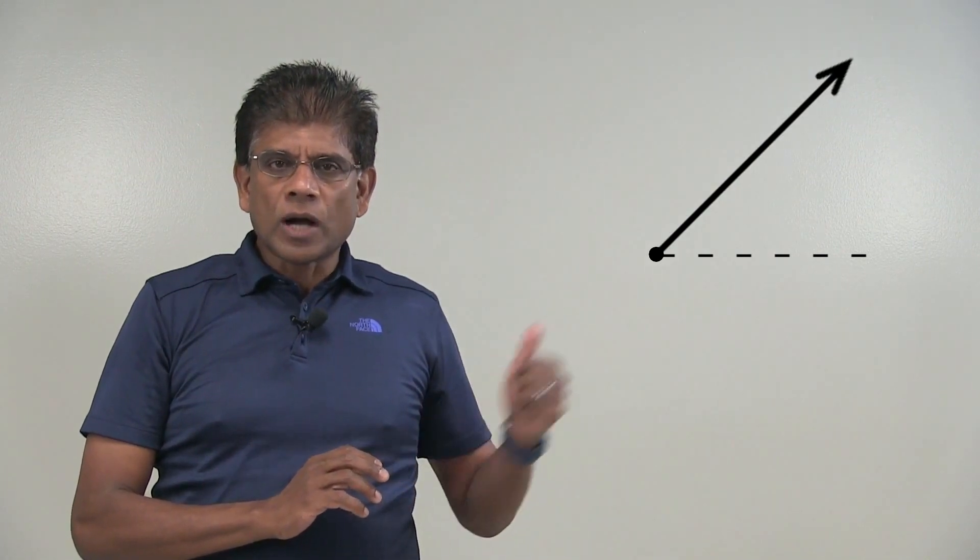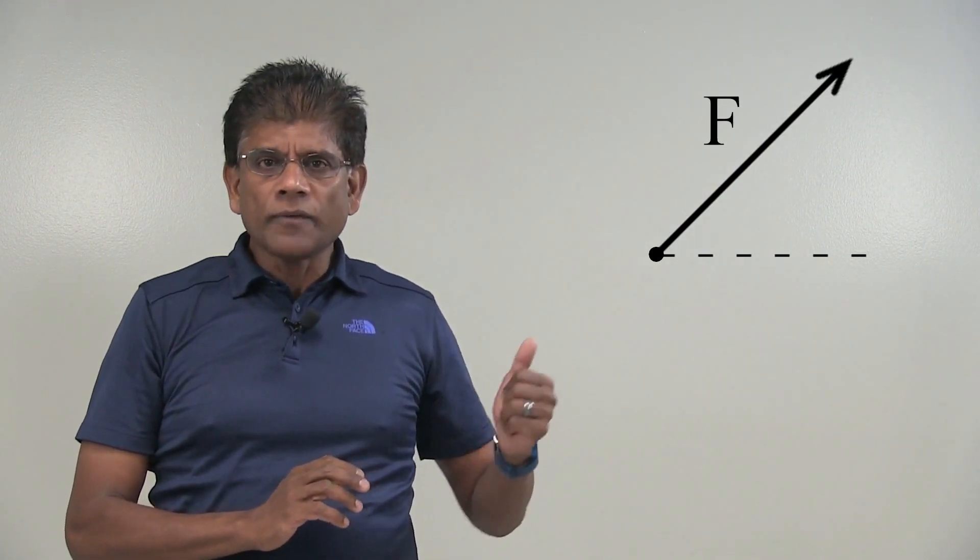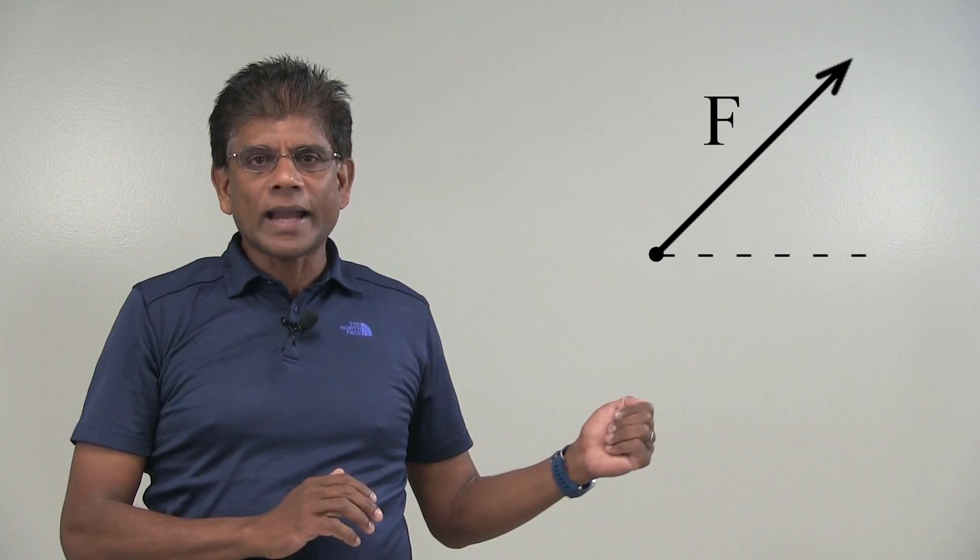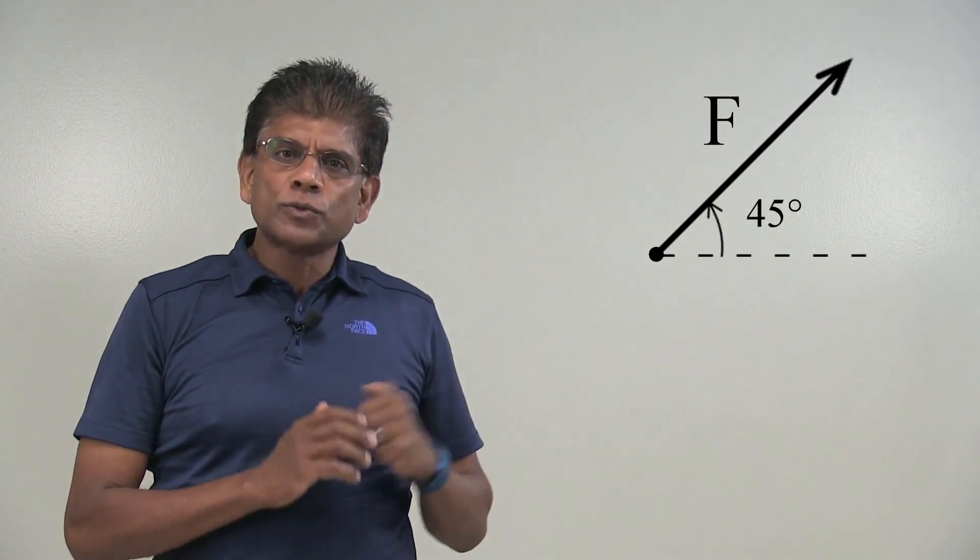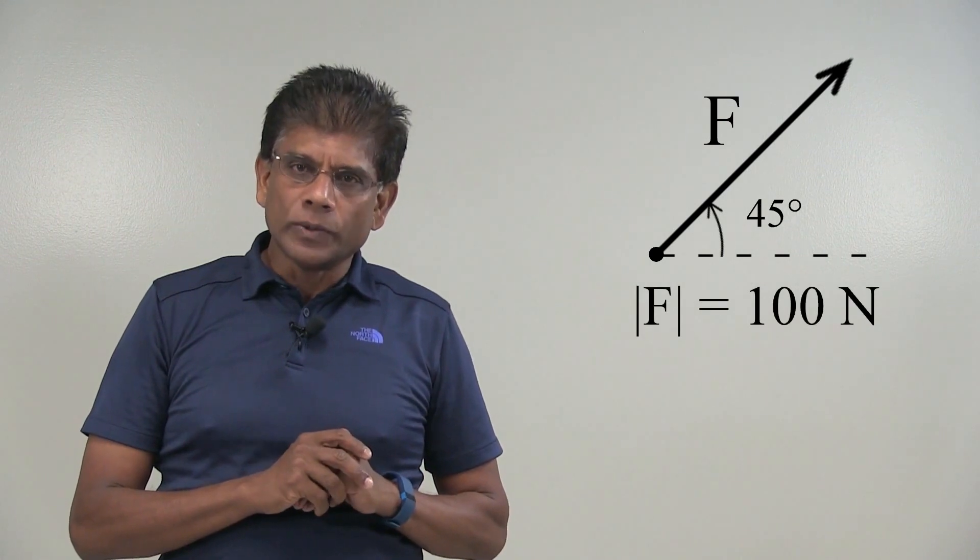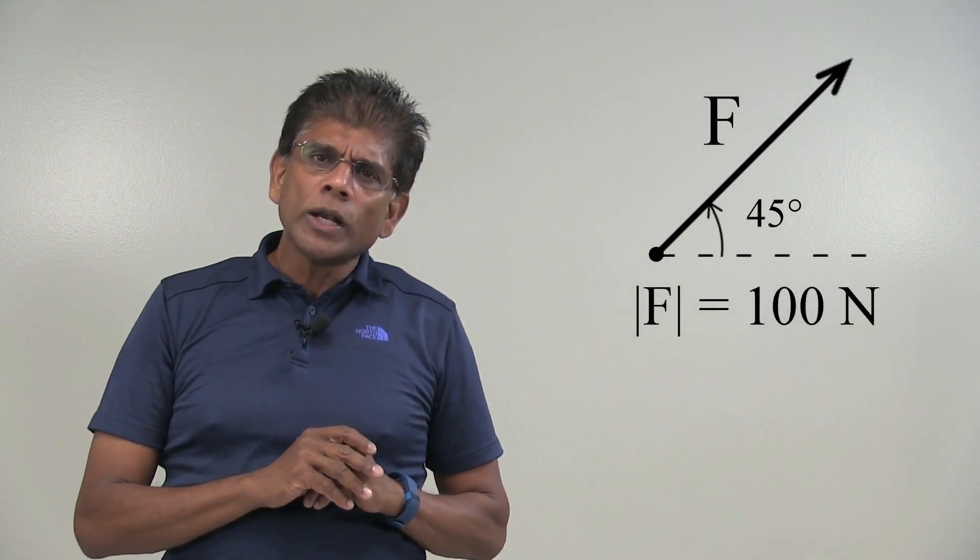Let's take a look at an example force. This diagram shows a force called F. The direction of the force is defined by an angle from the horizontal line and the magnitude of this force is 100 Newton. Force is not the only quantity that has direction and magnitude.